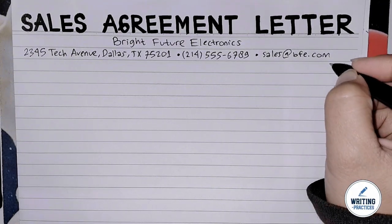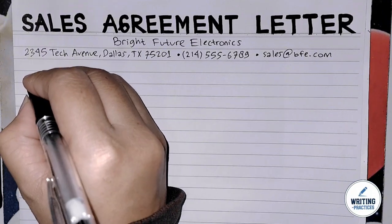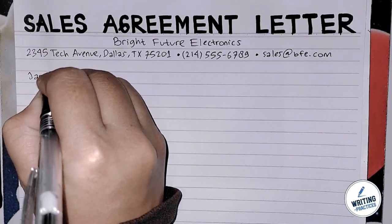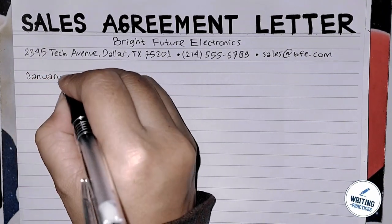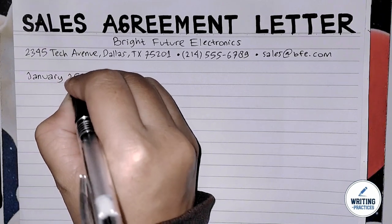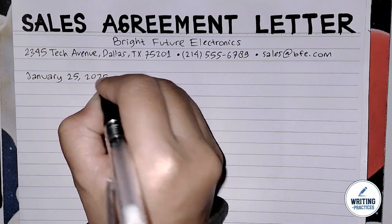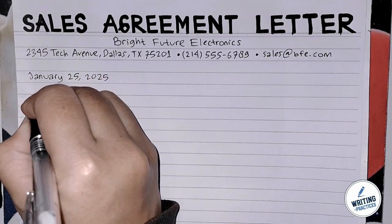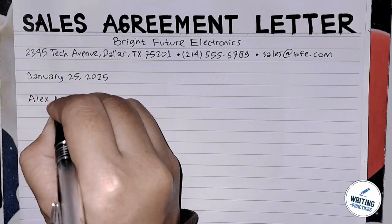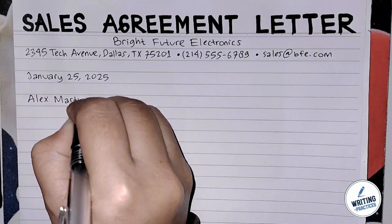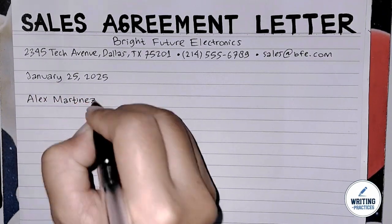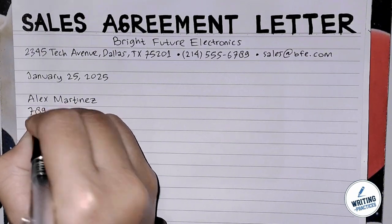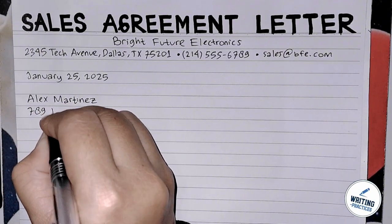Writing Practices will show you how to write a sales agreement letter step by step. First of all, you need to write the sender's information. This section includes the full name, address, email, and phone number of the company or the seller. It serves to identify the entity initiating the agreement, and it's essential to include all necessary contact information for clarity and future correspondence.